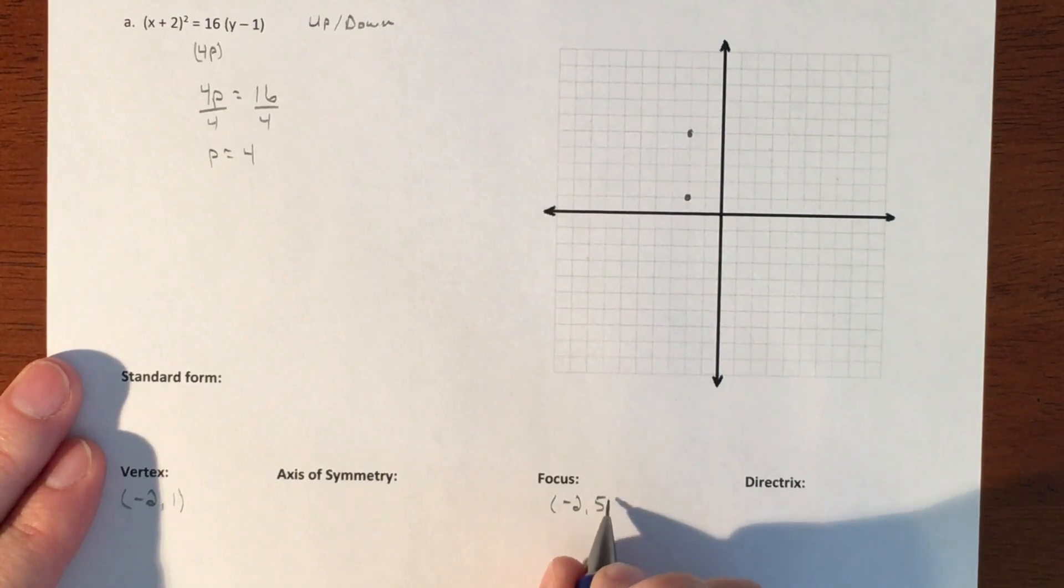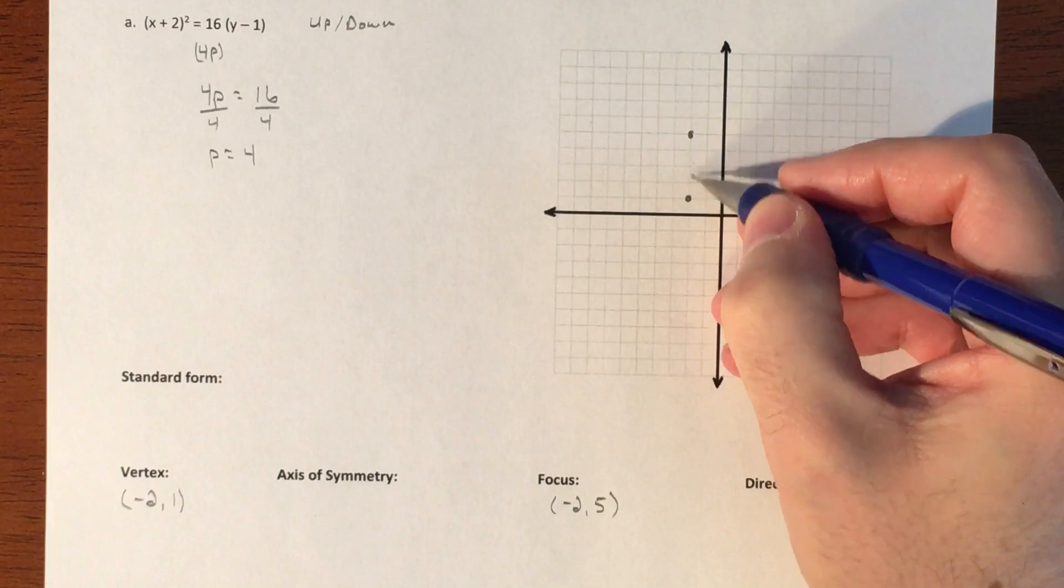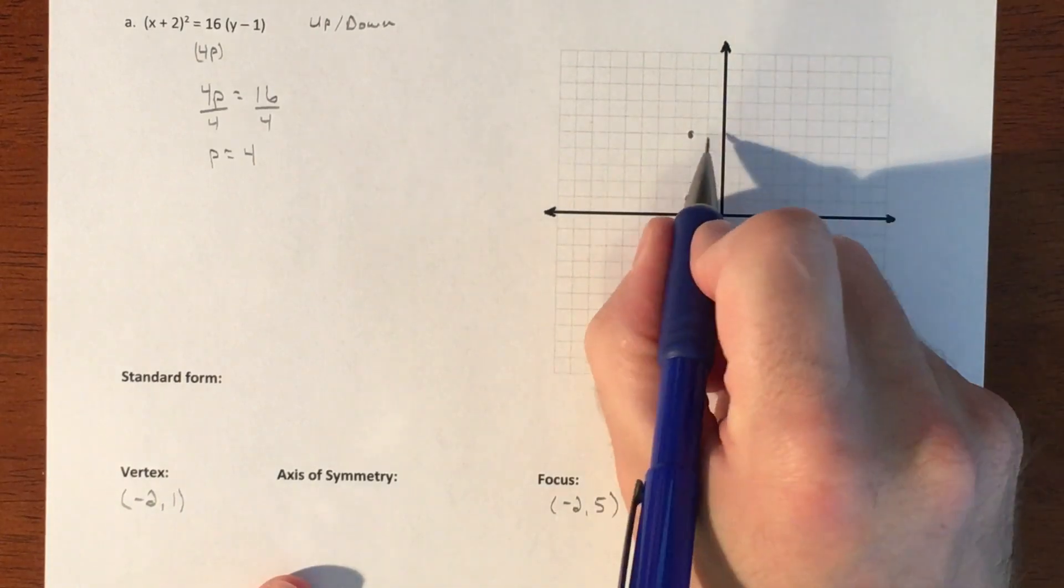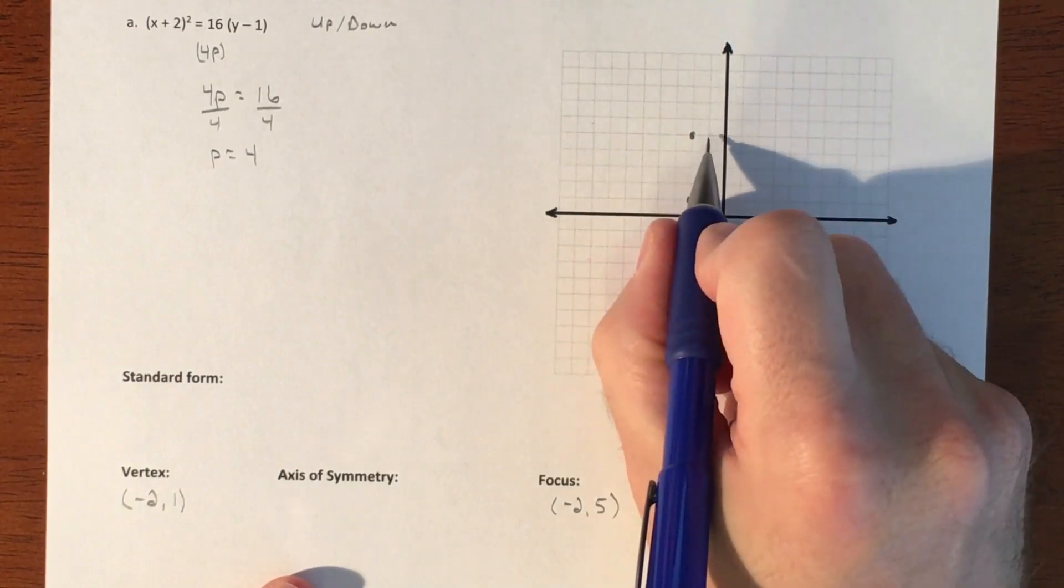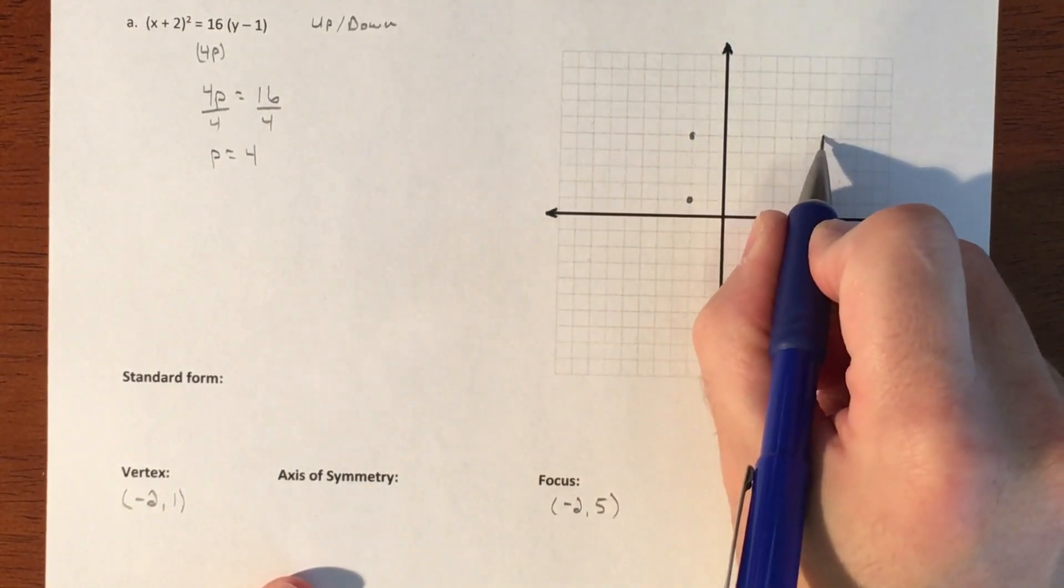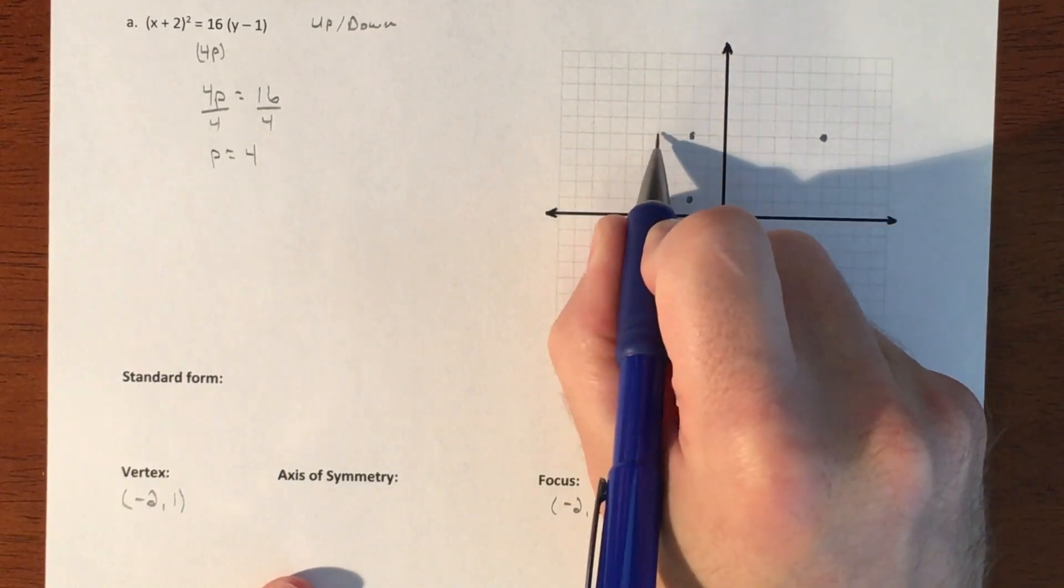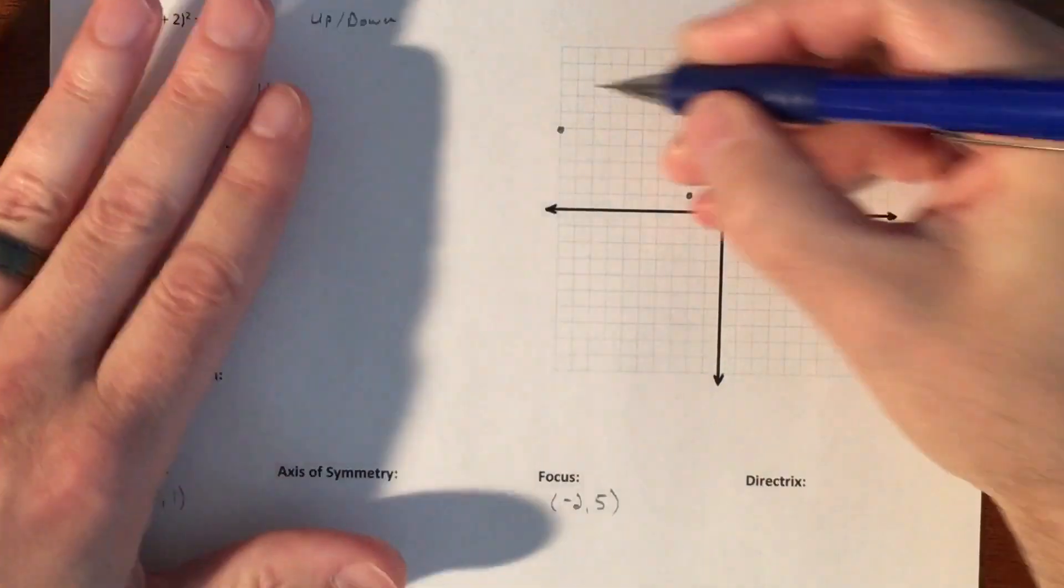To build the rest of this graph, remember that this distance, whatever this distance is, it's going to be twice that in either direction. So since this is four, we're going to go out eight. One, two, three, four, six, seven, eight, and then one, two, three, four, five, six, seven, eight. That is the basic shape of our parabola.